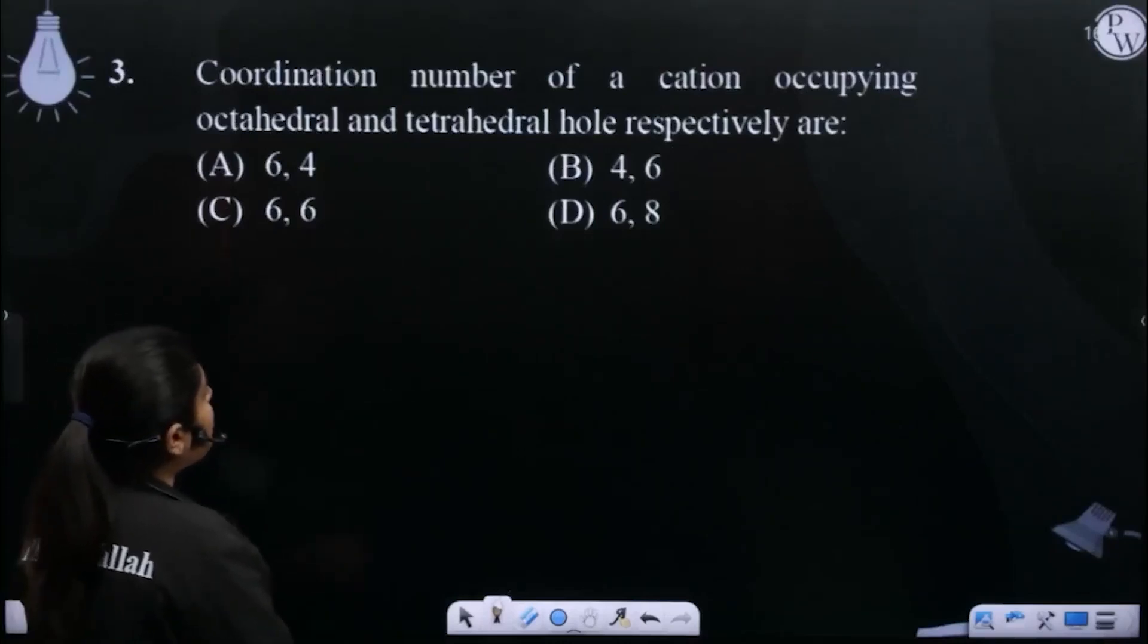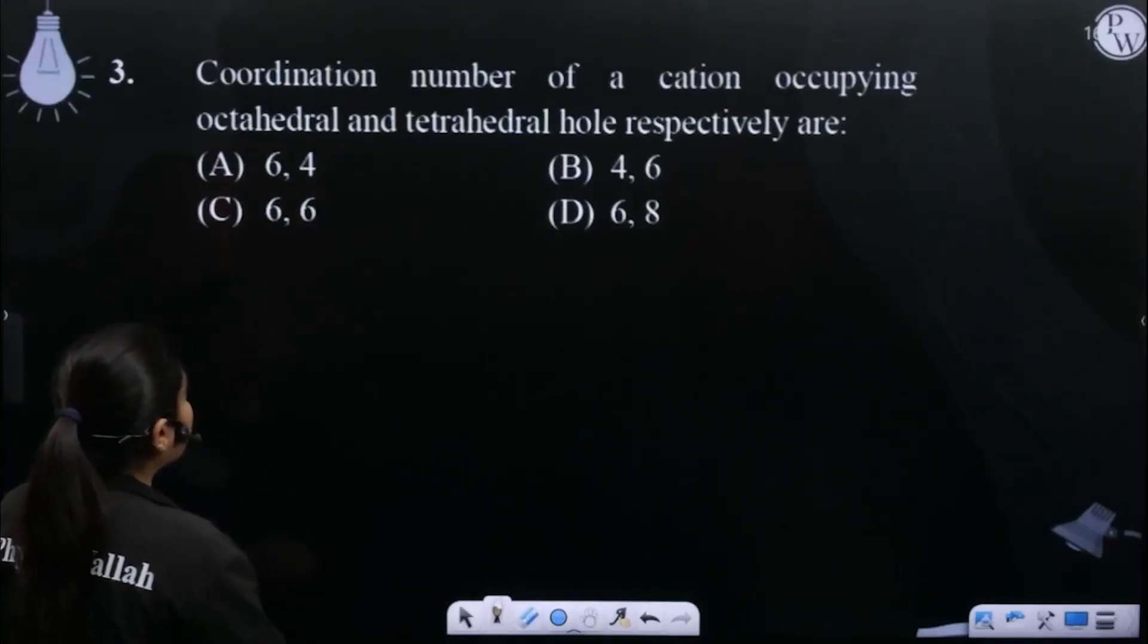Question number 3, coordination number of a cation occupying the octahedral and tetrahedral voids respectively are?